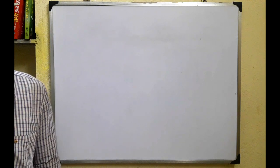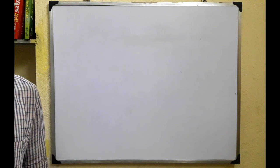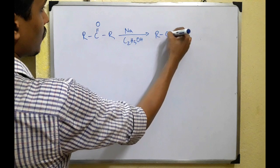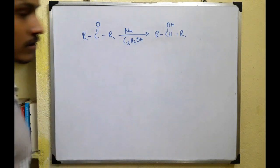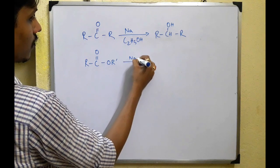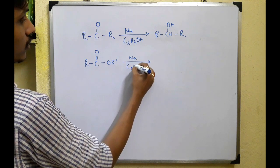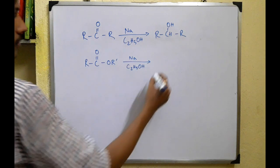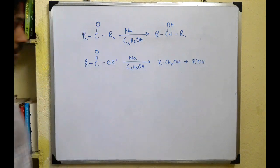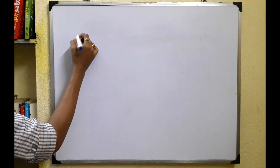In this video we will study the Bouveault-Blanc reduction, which was used to reduce carbonyl compounds or esters using sodium metal in ethanol to produce alcohols. If we take an ester, then on treatment with sodium in ethanol, it gives two alcohols as the products. Now let's see the mechanism of this reaction, taking a ketone as the starting material.